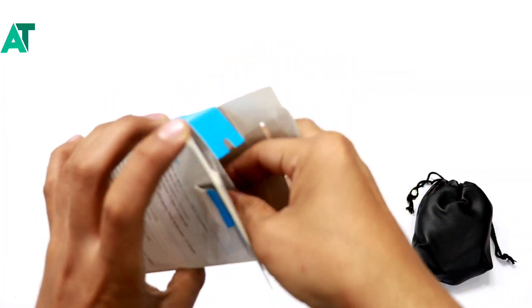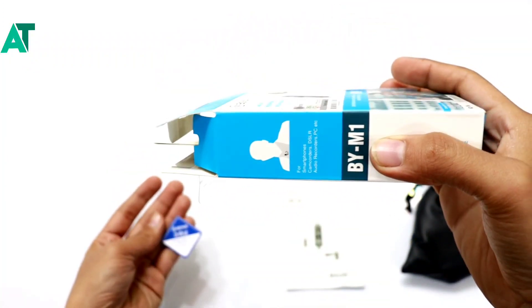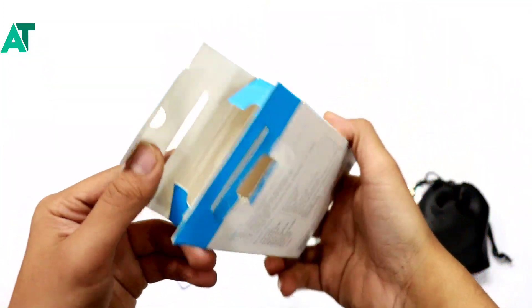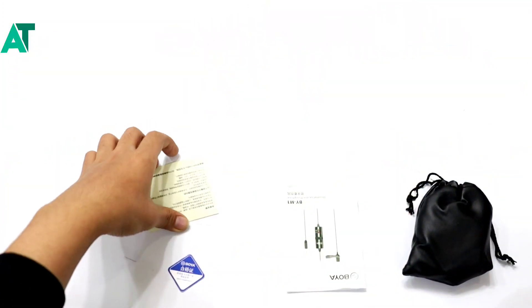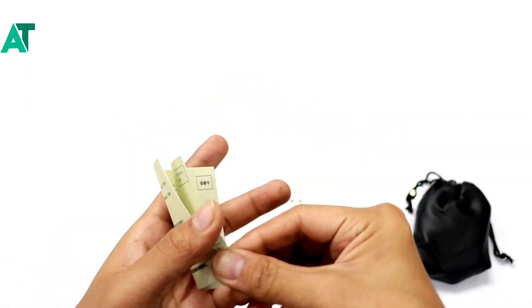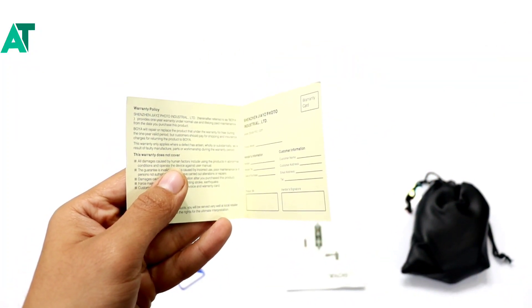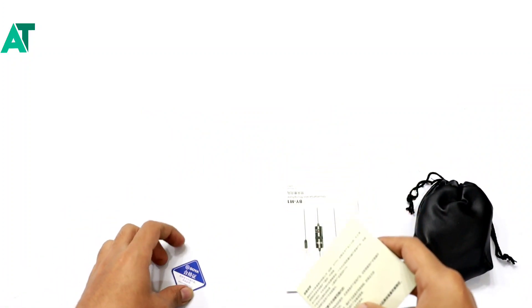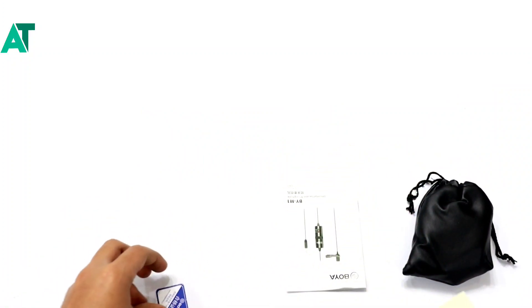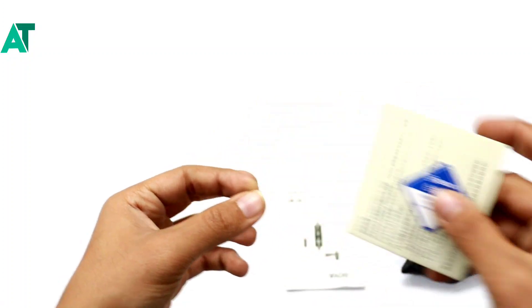Before we check the box contents, let's see what's on the box itself. Here's a tag, and there's a booklet which is basically a user manual. The text is in Chinese language.